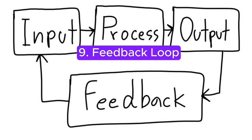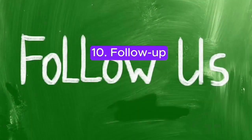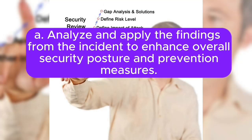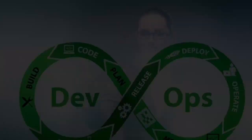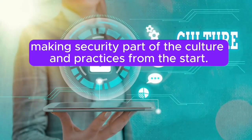9. Feedback loop: Continuously gather feedback from team members, stakeholders, and the incident response community to further enhance the response plan. 10. Follow up: Analyze and apply the findings from the incident to enhance overall security posture and prevention measures. Remember that a DevOps environment should integrate security into the development and deployment pipelines, making security part of the culture and practices from the start.